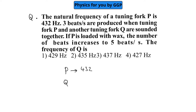There are two possibilities. The frequency of Q can be equal to 432 plus 3, which means it can be 435 Hz, or another possibility is it can be 432 minus 3, which is equal to 429 Hz. These are the two possibilities.